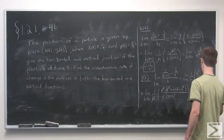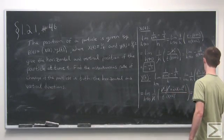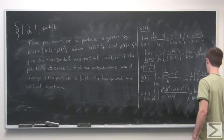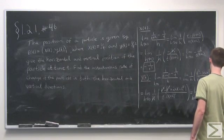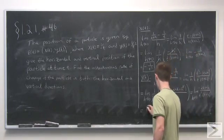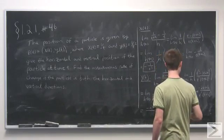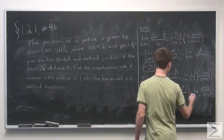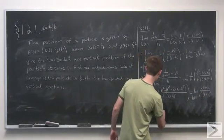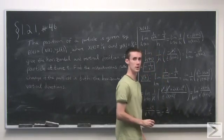This leaves us with the limit as h goes to 0 of negative 2t plus h in the numerator over t squared times t plus h quantity squared. Substituting h equals 0, we have negative 2t in the numerator over t squared times t squared, or t to the 4th. So the result simplifies to negative 2 over t cubed.